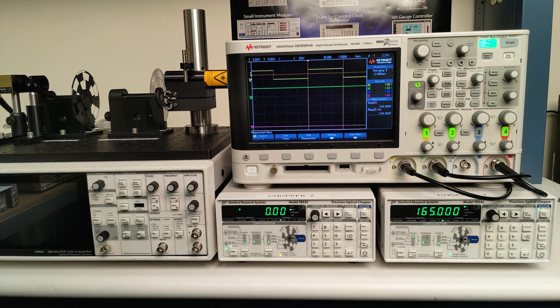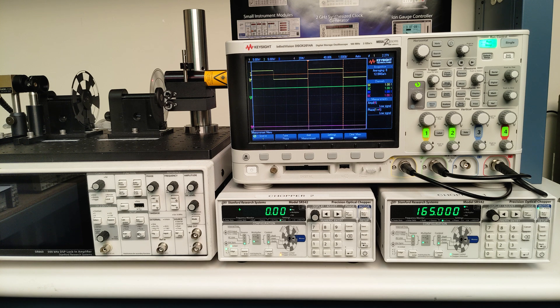When I switch in the ND filter, there is an attenuation of the beam intensity by three orders of magnitude, and the 58 millivolts signal becomes 58 microvolts, which is too small to visualize on the scope.